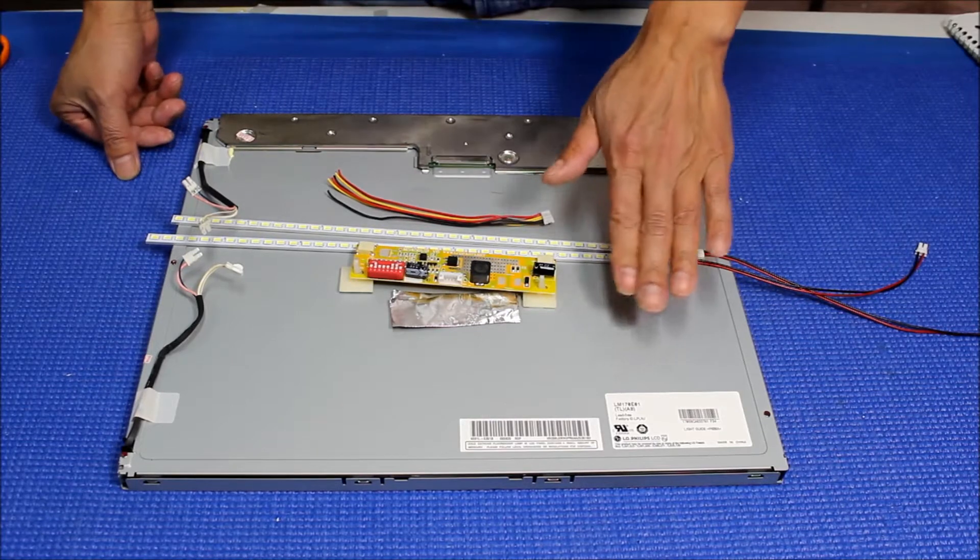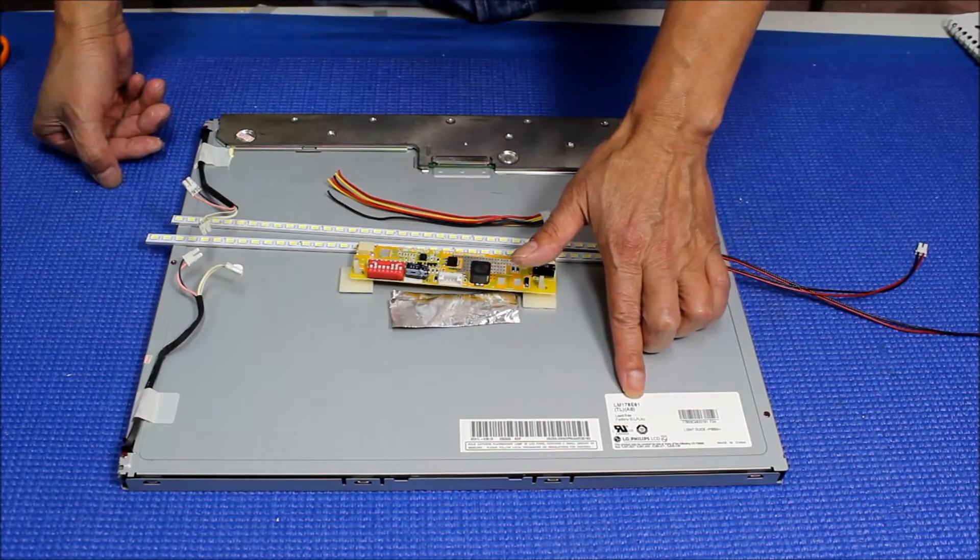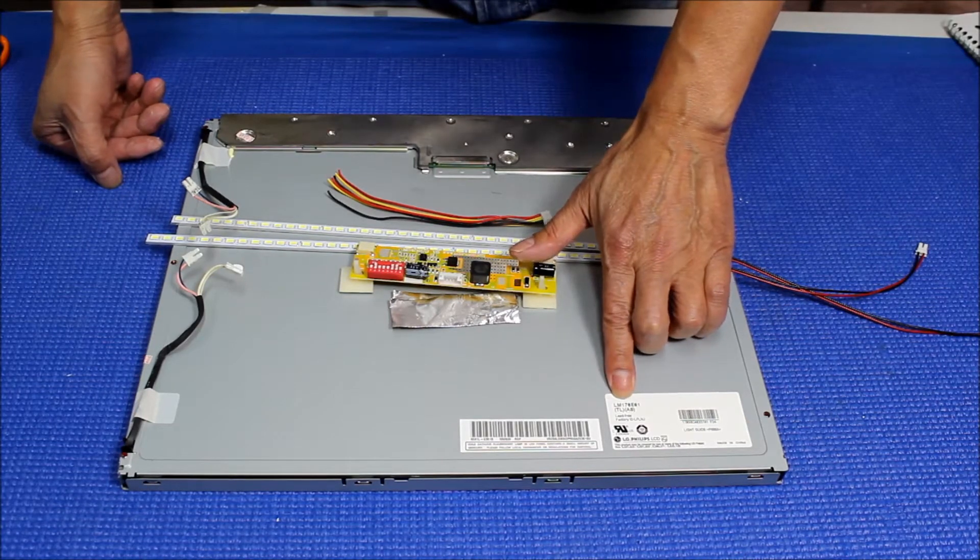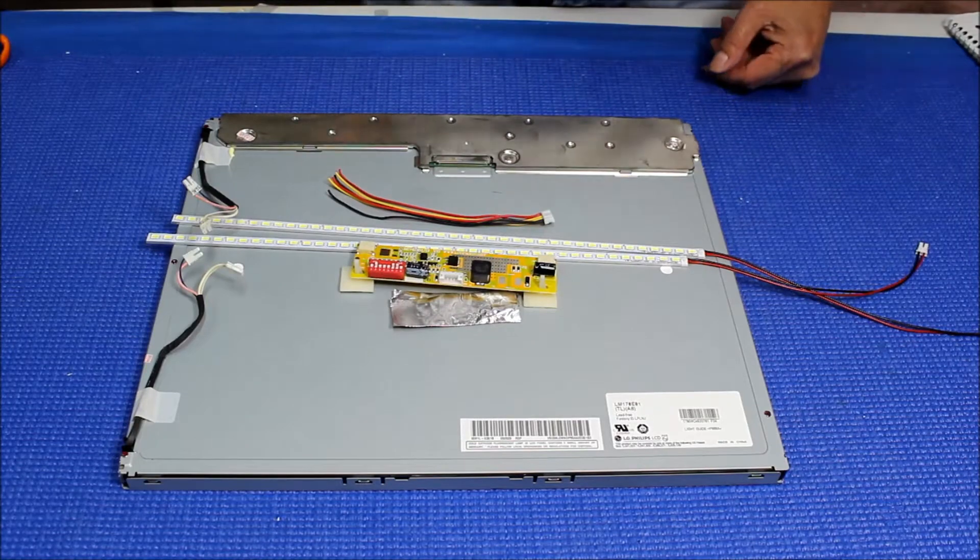Again, this screen is made by LG Philips, the screen number is LM170E01. It's a 17-inch and it's quite popular in industrial applications.